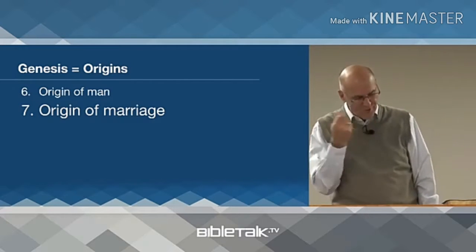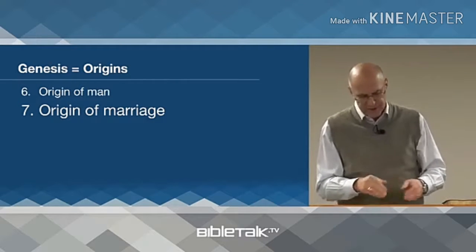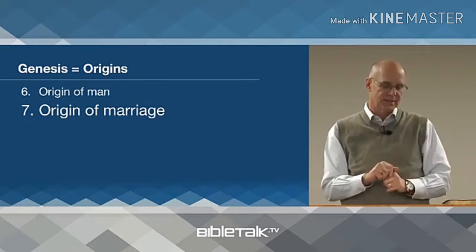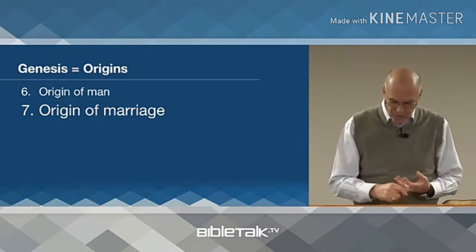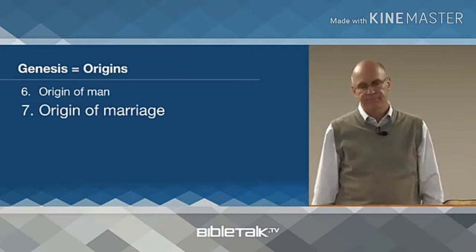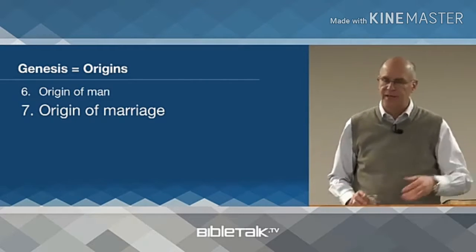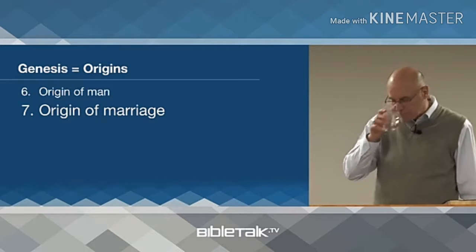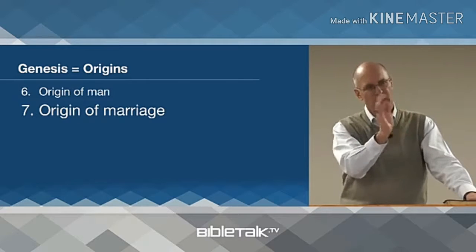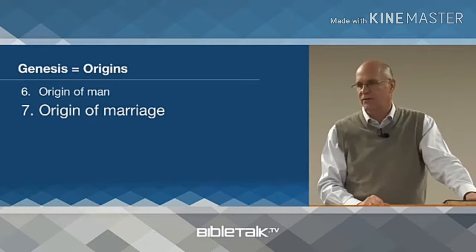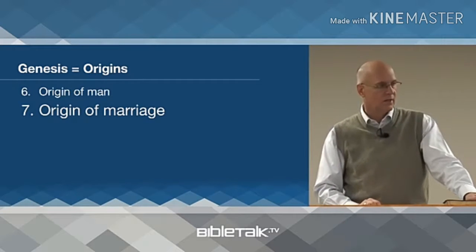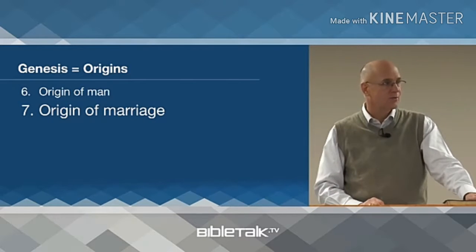Number seven: the origin of marriage. Genesis records the universal and stable institution of marriage and the home in a monogamous, patriarchal, stable society. Polygamy, adultery, pedophilia, divorce, homosexuality — all of these things come later as this original model began to disintegrate. Gay marriage is being legalized in various states, and we see all kinds of immorality being applauded in the media, but it goes back a long time — not just our generation. The beauty of Genesis is we find out why this has happened.